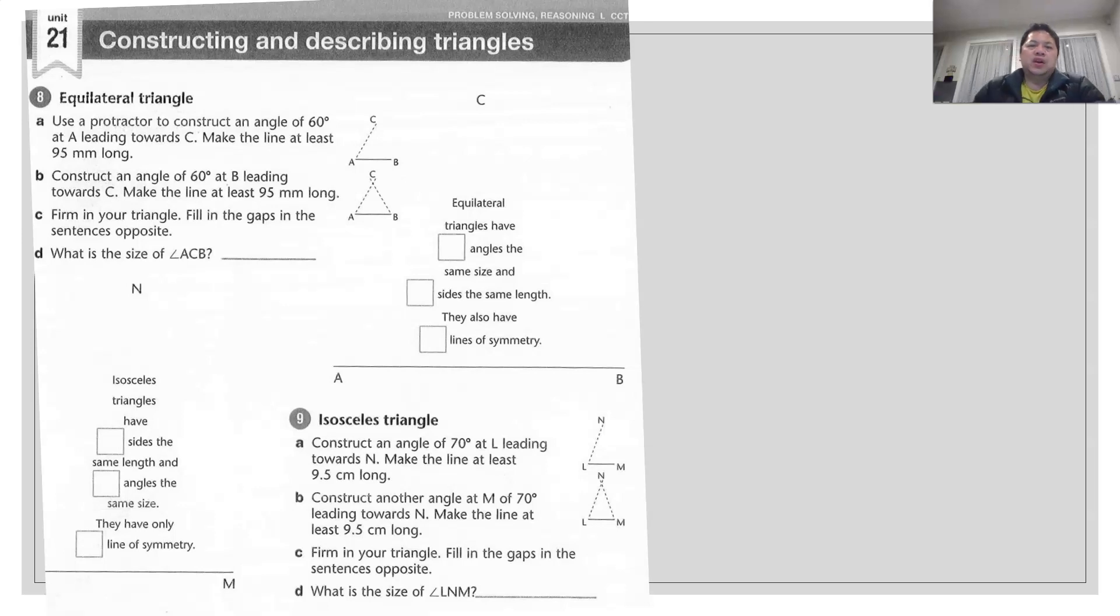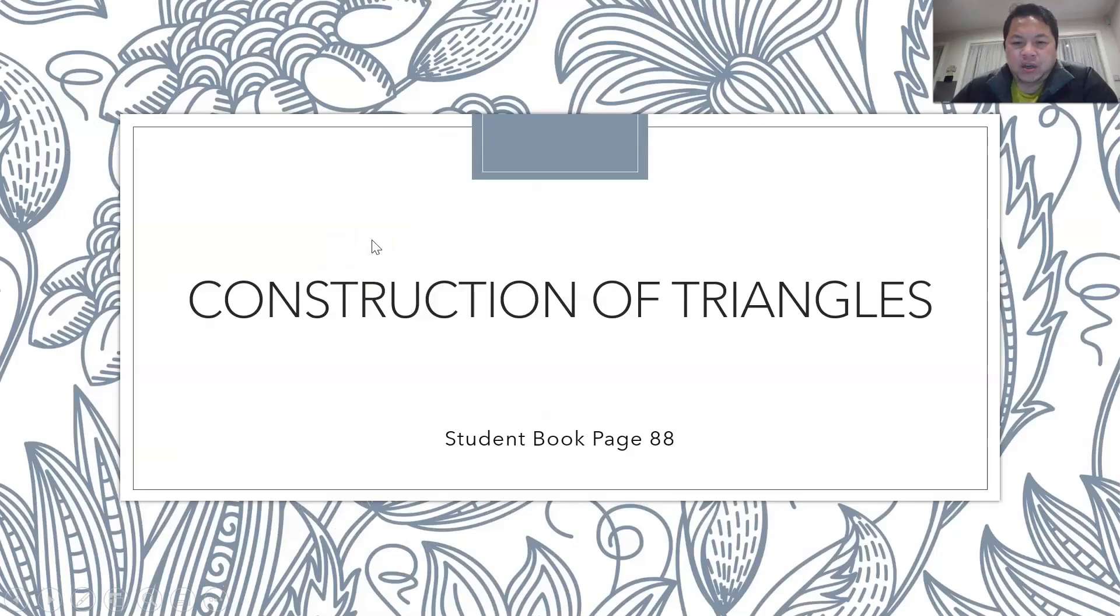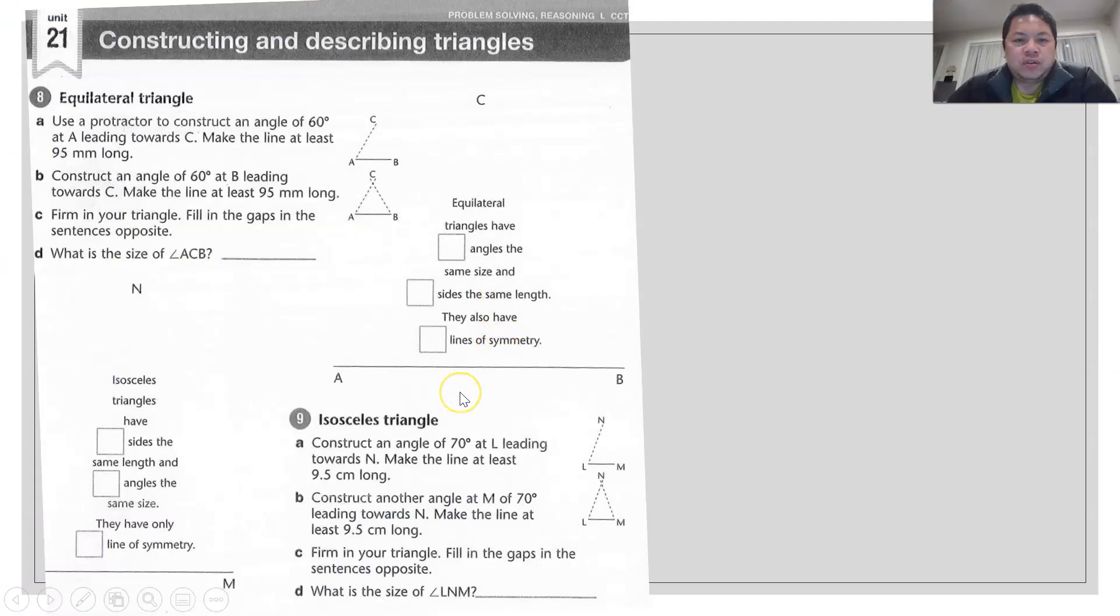To construct a triangle, a few things that you need: of course you need a pencil, a protractor and a ruler. On this particular page, 688, you're supposed to construct a triangle based on the instructions given. One is an equilateral triangle, one is an isosceles triangle, and the other one is a scalene triangle. I'm going to show the demonstration on how to draw an equilateral triangle and scalene triangles today.